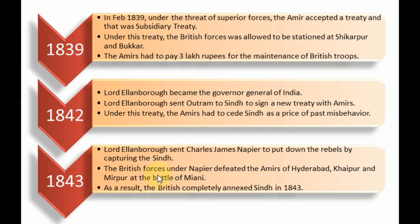In response, in 1843, Lord Ellenborough sent forces under Charles James Napier. Napier defeated the Amirs of Hyderabad, Khairpur, and Mirpur at the Battle of Miani, and thus the British finally annexed Sindh in 1843. That's all about the annexation of Sindh by the British, which happened in 1843.